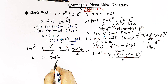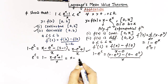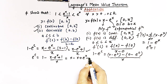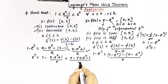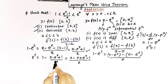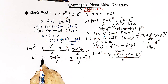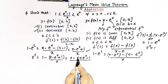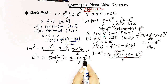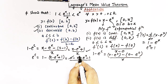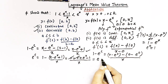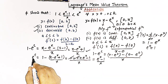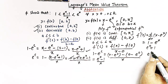Rearranging, we can write e raised to c equals 1 minus (x minus e raised to x plus 1) over x. Expanding the numerator: x minus x minus e raised to x plus 1, all over x, simplifies as the x terms cancel, leaving e raised to x minus 1 over x.